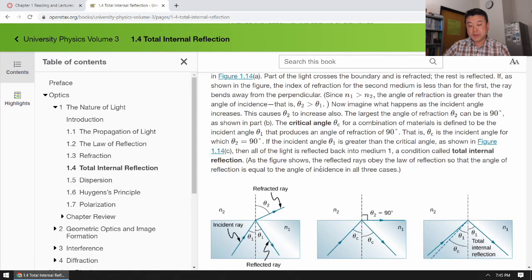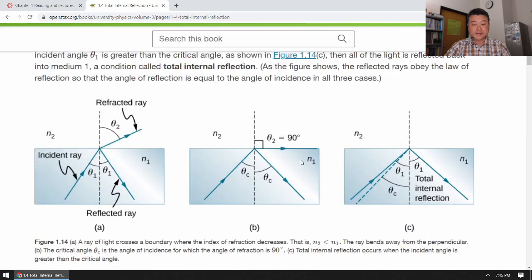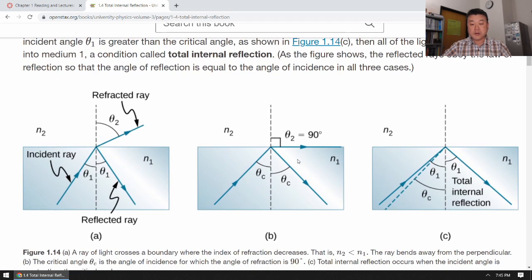So total internal reflection is what happens when you get these arrangements set up so that the light ray that would have refracted through when you work out the math, if it's going to be greater than 90 degrees, then there can be no refracted ray. So all the intensity of light that comes in has to be reflected. That's what total internal reflection describes.